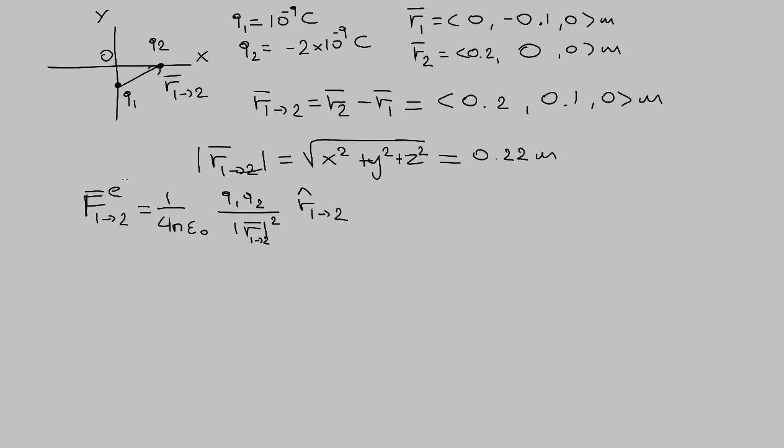The electric force from charge 1 on charge 2 is given by the constant 1 over 4 pi epsilon naught times the charge Q1 times Q2 divided by the distance squared times R hat.